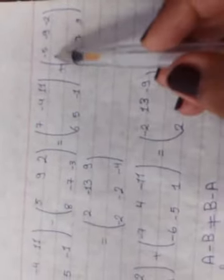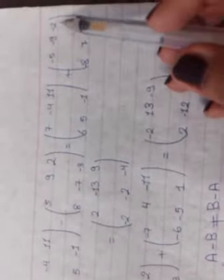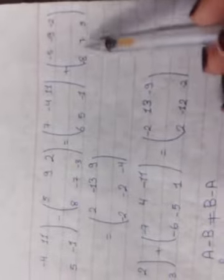5 will be negative 5, 9, negative 9, 2, negative 2, 8, negative 8, negative 7 will be 7, and negative 3 will be 3.